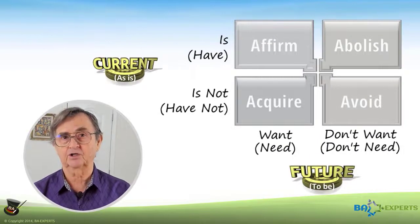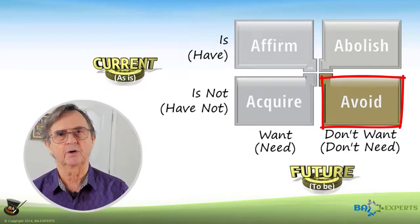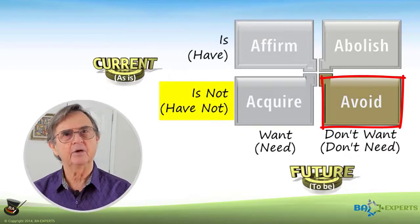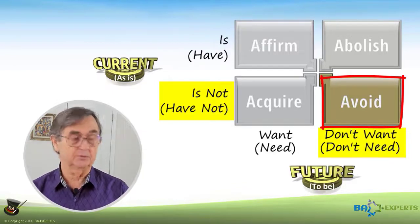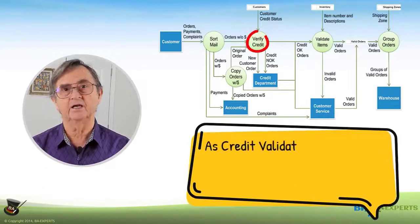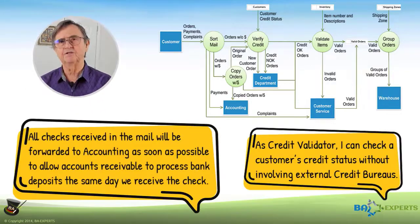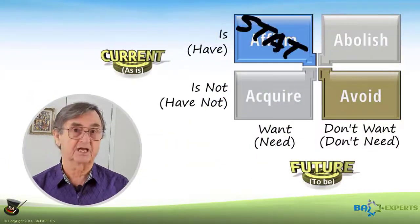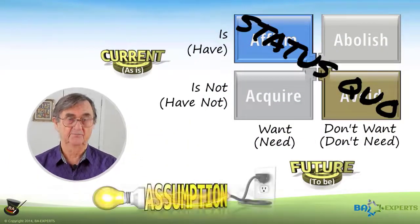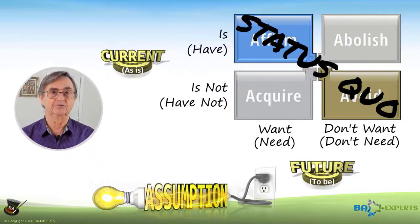Another class of requirements that are often overlooked are those defining things we want to avoid. These describe functions, features, or requirements that you don't currently have, and you want to make sure that the new solution does not force you into getting them. An example of a requirement defining something to avoid could be: 'As a credit validator, I can check a customer's credit status without involving external credit bureaus.' Both of these scenarios describe conditions that are true now and should remain so when your digital solution is in use. Since requirements in these classes describe the status quo, they are often assumed. And as a veteran of too many change initiatives to count, I can confirm that assumptions lead to failed products.